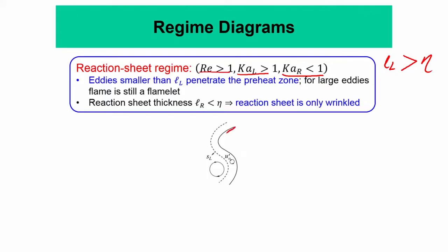The reaction sheet retains its structure, whereas eddies penetrating inside can change the preheat zone structure. So the preheat zone structure is changed while the reaction zone structure is retained — this is called the reaction sheet limit. It is very much of practical interest in gas turbine engines, SI engines, afterburners, etc. A lot of those flames essentially belong to the reaction sheet limit.